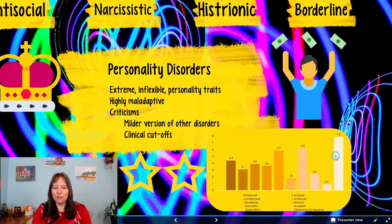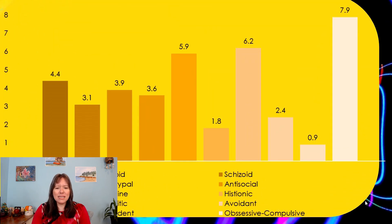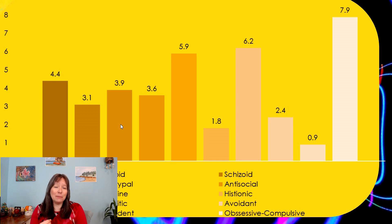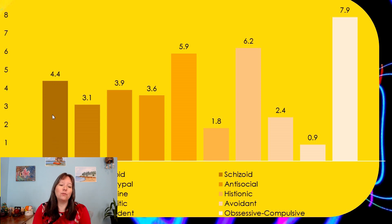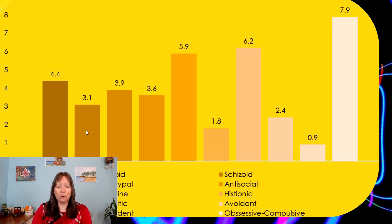I'm going to show you a chart of the prevalences. We can see that in the first three listed we have paranoid, schizoid, and schizotypal personality. Schizotypal actually shares some symptoms with schizophrenia, and paranoid could share some symptoms with anxiety disorders or schizophrenia. They almost look like milder versions where you don't have to have full-fledged schizophrenia or a full-fledged anxiety disorder.